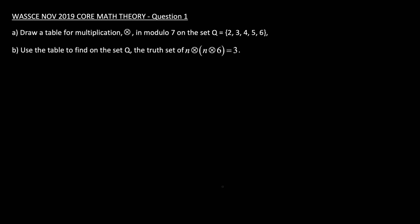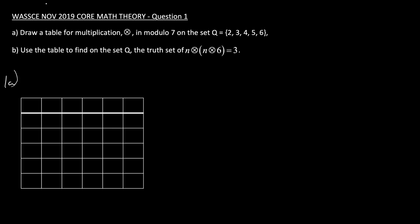Back again with another video. In today's video we'll be solving the Nov/Dec 2019 Commerce Theory questions. We'll begin with question one: draw a table for multiplication in modulo seven on the set S equal to {2, 3, 4, 5, and 6}. So we'll be drawing a table in modulo seven.